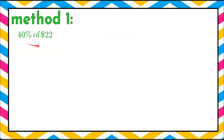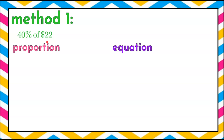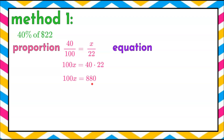Method 1: find 40% of $22, using both a proportion and an equation. For the proportion, we write 40 over 100 — that represents 40%, which as a decimal is 0.40. We know the 100% of his cost was $22, so we use cross products: 100 times x equals 40 times 22. Multiplying 40 times 22 gives 880. Dividing each side by 100 — since 100 divided by 100 is 1 — leaves x, and 880 divided by 100 is 8.80.